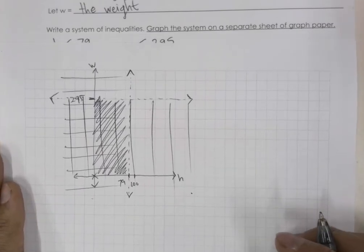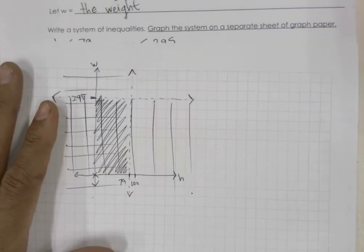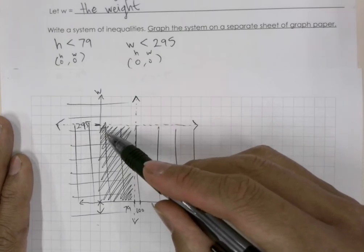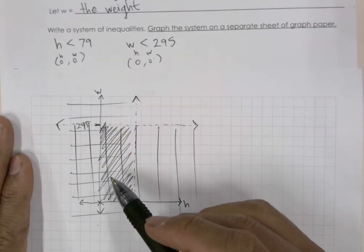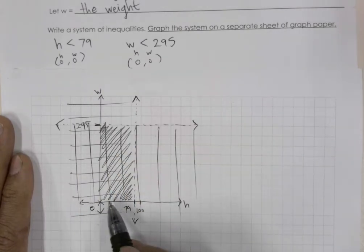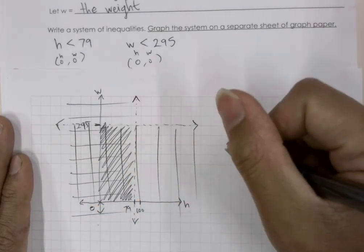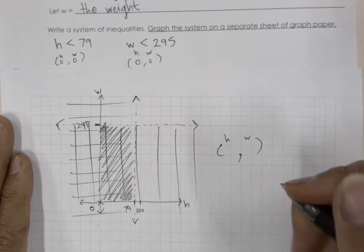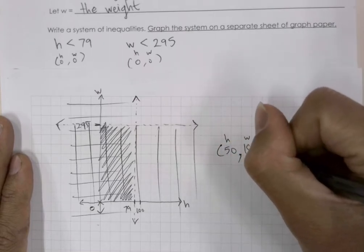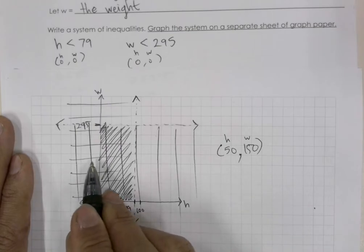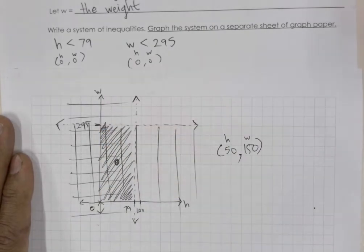The next part of the problem asks us to find a possible solution — an h and w coordinate pair that exists inside the shaded area. We have 0 to 79 on the x-axis and 0 to 295 on the y-axis. A possible ordered pair would be a height of 50 and a weight of 150: h = 50 would be right about here, and 150 would be right about there — that point exists in the shaded area.